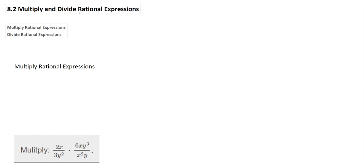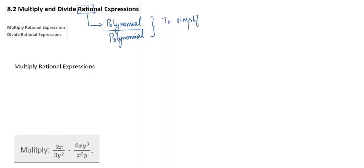Let's remember this is 'rational' — it's a ratio of polynomials, so it's polynomial over polynomial. When we try to simplify this, remember that simplifying can only happen by factorizing. We must factorize to cross-cancel, because these are polynomials with pluses and minuses between terms, so you can't cross-cancel without factorizing first.